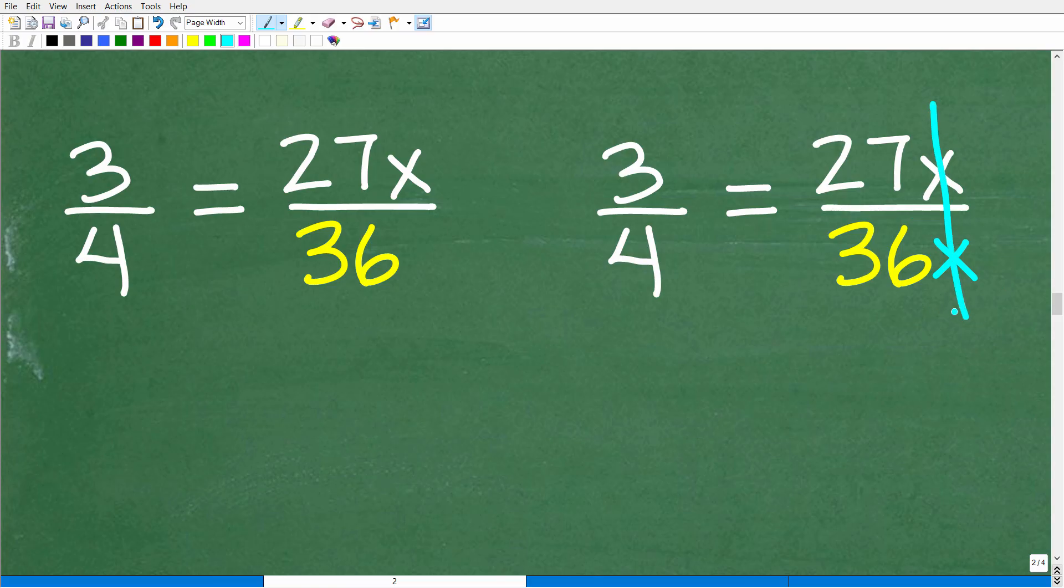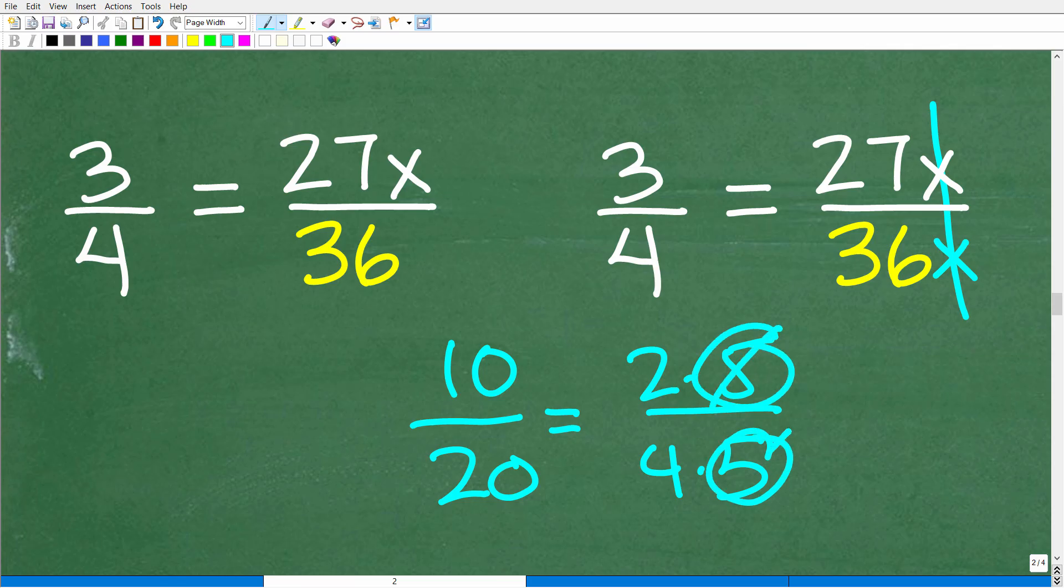What's going on is we have like factors in the numerator and denominator. If you're reducing a fraction, say 10 over 20, this is the same thing as 2 times 5 over 2 times 10. Or we can look at it as 2 times 5 over 4 times 5. The 5s are like factors. This is being separated by multiplication, so we can cross-cancel.